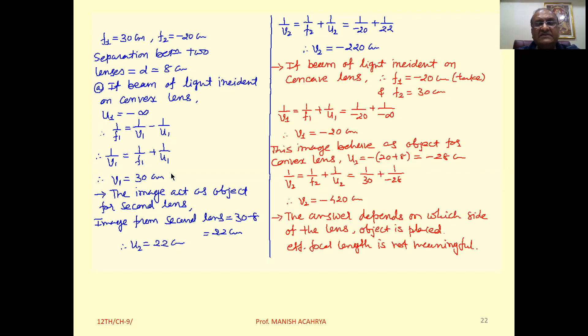For the convex lens at 30 centimeter, image formation occurs. Now this image formed by the convex lens will behave as an object for the concave lens. Distance is 8 centimeter, so convex lens forms image at 30, concave is at 8, so the object distance is 30 minus 8 equals 22 centimeter.